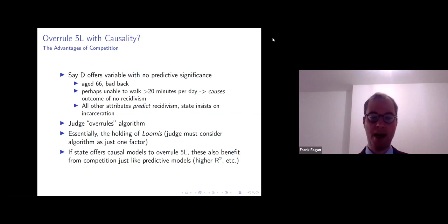Well, here it's easy to see that the judge would overrule the algorithm because it's clear that Loomis or another defendant in this situation would be unable to commit a crime in the future, for instance, a violent crime if this is a violent offender, if they're unable to walk or leave their house. And so this is essentially the holding of Loomis where the judge is considering the algorithm as just one factor. But our point with respect to this causality point is that even if the state were to offer causal models to overrule this fifth letter variable or some other unique attribute variable, these types of causal models also benefit from competition.